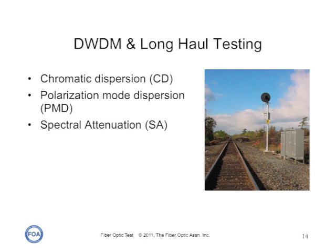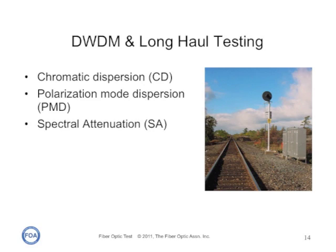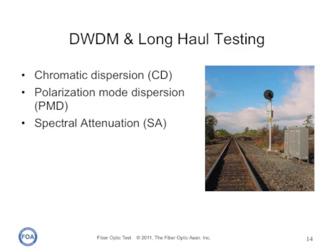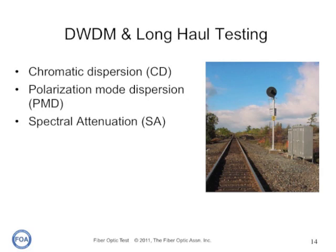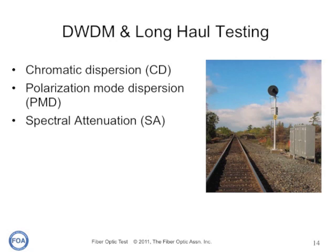Very long distance networks need special testing, primarily for the dispersion that limits the bandwidth over long distances — chromatic dispersion and polarization mode dispersion — and then they need to be tested for spectral attenuation, because dense wavelength division multiplexing uses a wide spectral band in the fiber, and the fiber must support all of those different wavelengths for the entire length of the span.